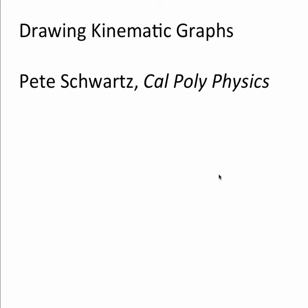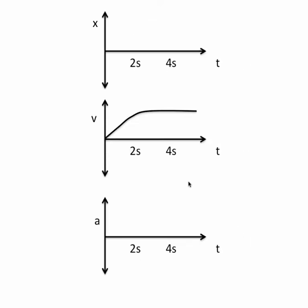So how do we draw kinematic graphs? For instance, let's say I give you a velocity versus time graph. This graph tells you how your velocity starts at zero and increases for two seconds and then continues on at that same high rate afterwards.